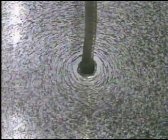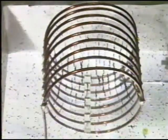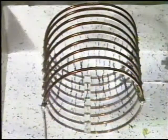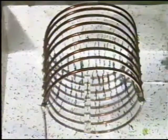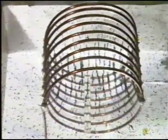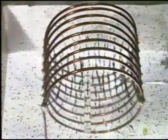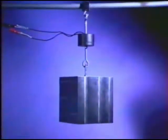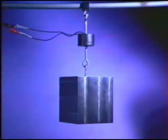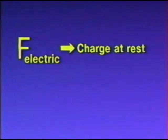When the wire is fashioned into a series of loops or a coil, the cumulative effect of the magnetic fields around each individual loop produces a magnetic field along the central axis of the coil. Electromagnets created using this phenomenon provide strong magnetic fields that can be turned on and off.